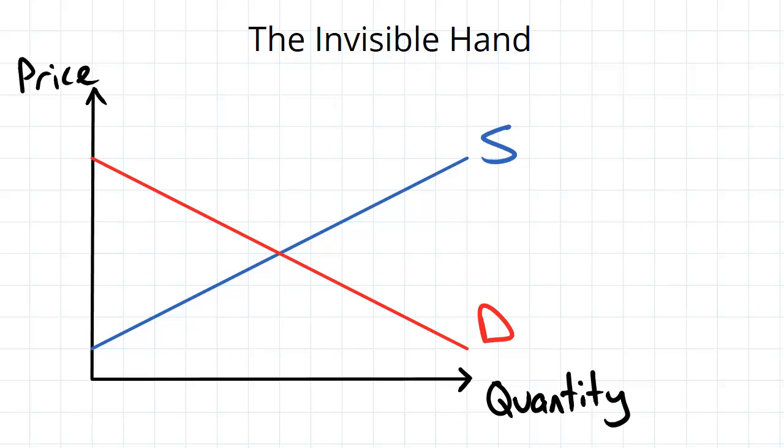If we want to use surplus as a measure of how well off people are, then you can say that equilibrium is where everybody in society is better off. But how do we get there?